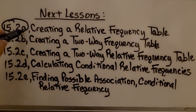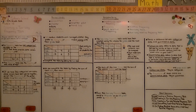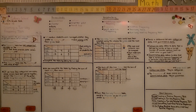We're finished with 15.2b and we're going to be moving on to C — creating a two-way relative frequency table. Remember to be cautious and precise when entering data into the table. Make sure your addition for the totals is precise. Have a wonderful day and please join me for the next part of the lesson.